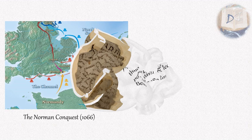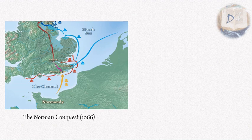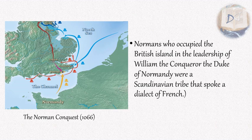For the English language, the Norman Conquest is considered a crucial historical event. The Normans, who occupied the British island under the leadership of William the Conqueror, the Duke of Normandy, were a Scandinavian tribe that spoke a dialect of French.